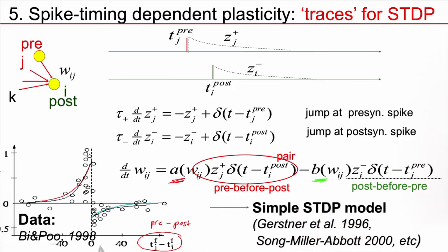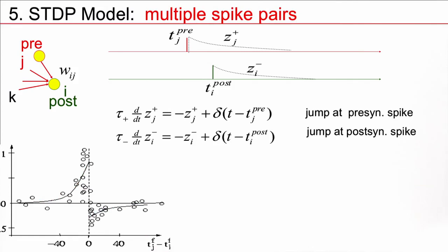And such a STDP window nicely accounts for data, for example, here, the data of Bi and Poo from 1998. So far, I've talked about a single pair of spikes. Now, what happens if there are several spikes?